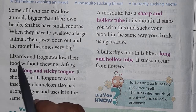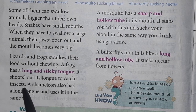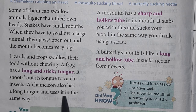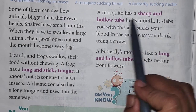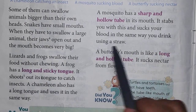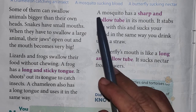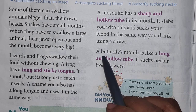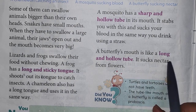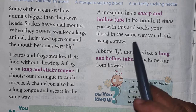Lizards and frogs swallow their food without chewing. A frog has a long and sticky tongue — it shoots out the tongue to catch insects. A chameleon also has a long tongue and uses it the same way. A mosquito has a sharp and hollow tube in its mouth — it stabs you and sucks your blood, just like drinking juice with a straw. A butterfly's mouth is also like a long hollow tube, called a proboscis, which it uses to suck nectar from flowers.